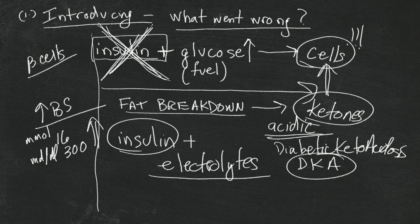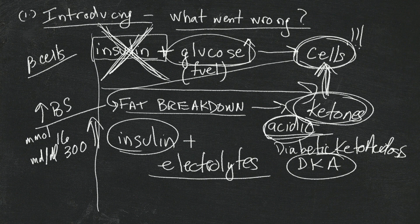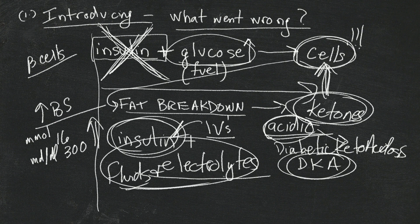Your body stops making insulin because the cells are attacked and destroyed. The glucose starts building up in your blood. The cells feel like they're starving and send a message to the brain saying please give us some fuel. The brain says no problem, we can break down some fat. Ketones are produced, and in the short term that works. But long term it doesn't, because those ketones are very acidic and we can't have our body fluids be too acidic — it's not compatible with life. If left untreated, you can develop diabetic ketoacidosis. The way it gets corrected is by getting IVs, insulin on board, some fluids and electrolytes, and you're feeling better.